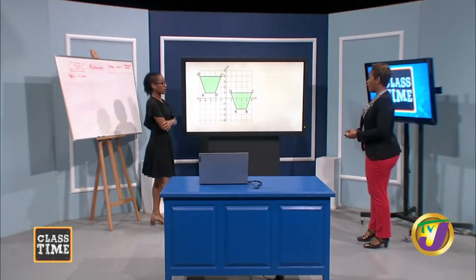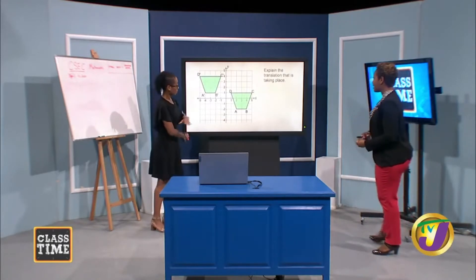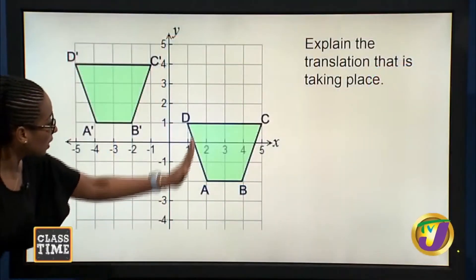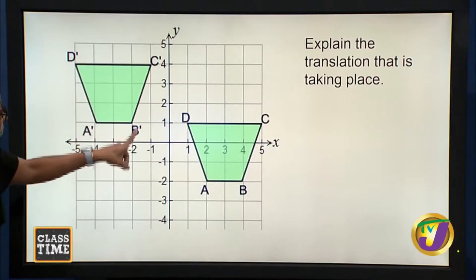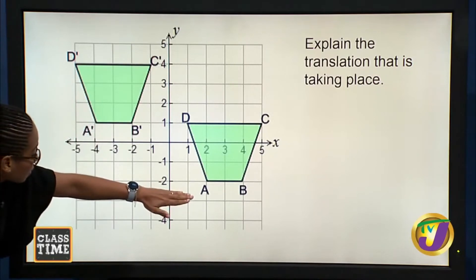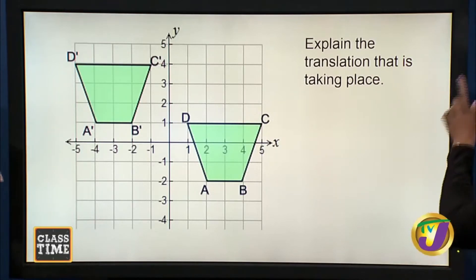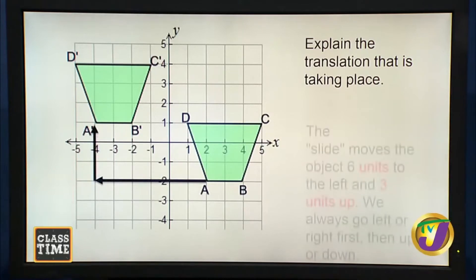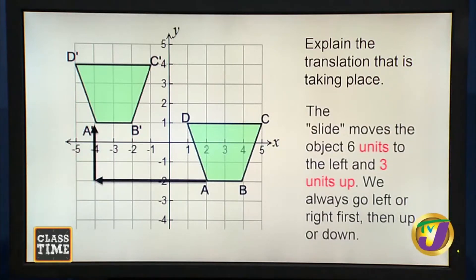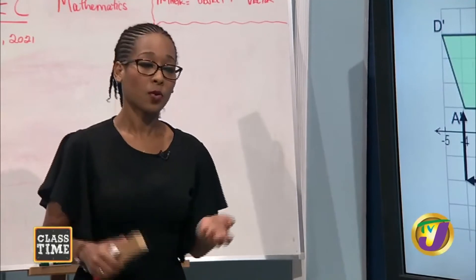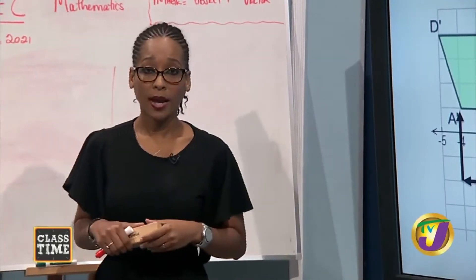Here we have both shapes on the Cartesian plane. Explain the translation taking place. This is our object — vertices A, B, C, D — and our image is A prime, B prime, C prime, D prime. Counting the movement: 1, 2, 3, 4, 5, 6 to the left — that's a negative value — and 1, 2, 3 upward. So the slide moves the object 6 units to the left and 3 units upward. We always go left or right — parallel to our x-axis — first, then up or down, parallel to our y-axis.